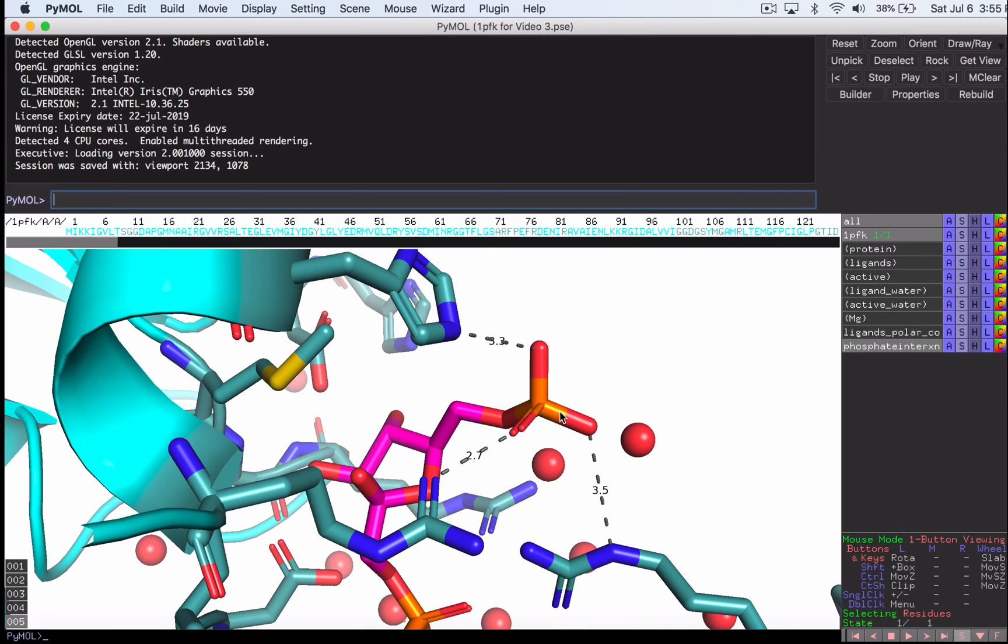In the previous video, we left off here. We were showing some interactions of amino acid side chains in an active site to a bound phosphate group, but our labels don't look very good. We can barely see the measurement here because it's obscured by this dash. I'm going to show you how to resize your labels in this video and move them into a better orientation to create publication quality images. Okay, let's begin.